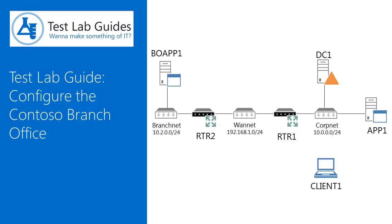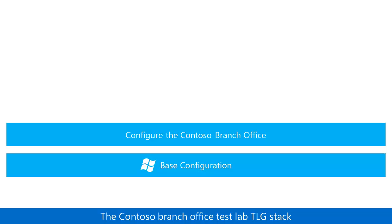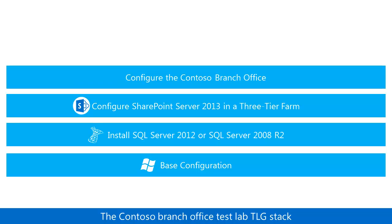Let's step through the Test Lab Guide for configuring the Contoso Branch Office. The Contoso Branch Office stack consists of the Base Configuration Test Lab Guide, or TLG, and then the Contoso Branch Office TLG, which adds routers, subnets, and a branch office server to the base configuration. Because the Branch Office TLG does not substantially change the corpnet subnet, but only adds new computers and subnets, it can theoretically be added anywhere in a stack. For example, you could add it to the top of the SharePoint Server 2013 Three-Tier Farm TLG stack, creating an environment to test SharePoint performance in a Branch Office.